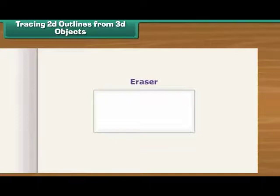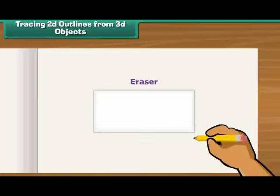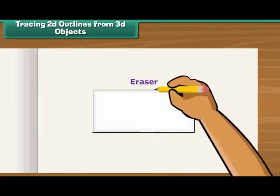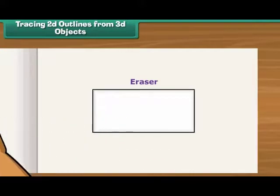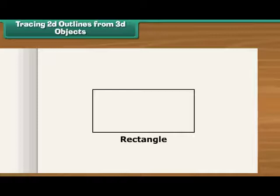Place an eraser on a sheet of paper. Draw lines along its outer edges. Remove the eraser. You can see a rectangle on the sheet.